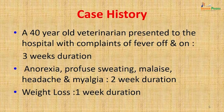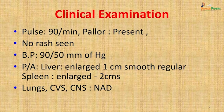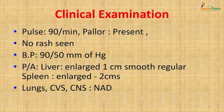Starting with Brucellosis: a 40-year-old veterinarian presented with complaints of fever off and on for 3 weeks, anorexia, profuse sweating, malaise, headache and myalgia of 2 weeks duration, and weight loss of 1 week duration. On clinical examination his pulse was 90 per minute, pallor was present, no rash was seen, blood pressure was 90/50 mmHg. Per abdominal examination revealed an enlarged liver 1 cm smooth and regular, spleen enlarged 2 cm. Lungs, cardiovascular system, and CNS showed no abnormalities.